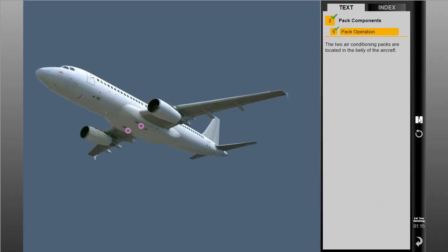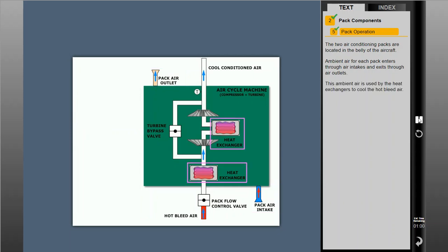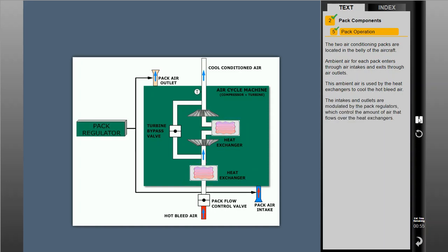The two air conditioning PACs are located in the belly of the aircraft. Ambient air for the PACs enters through air intakes and exits through air outlets. This ambient air is used by the heat exchangers to cool the hot bleed air. The intakes and outlets are modulated by the PAC regulators, which control the amount of air that flows over the heat exchangers. There are no flight deck indications to monitor the status of the PAC intake and outlet; however, their condition is checked during the exterior pre-flight.